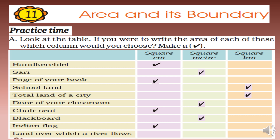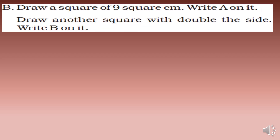Land over which the river flows will be square kilometer. Next: draw a square of nine square centimeters. Generally everybody makes a mistake — they draw a square with the side of nine centimeters. That would be wrong. You have to draw a square of nine square centimeters, which means the square will have a side of three centimeters.